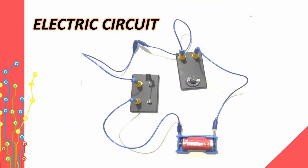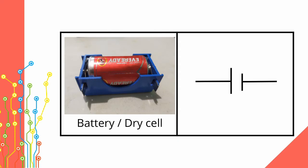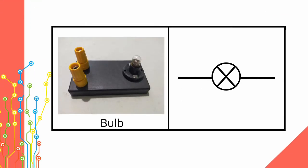This is a simple setup of an electric circuit. Let's learn the parts and symbols of an electric circuit. First is the battery — it is the source of electricity. This is the symbol for battery. The bigger line represents a positive terminal and the small one is a negative terminal. Next is the bulb. It provides the electrical load on the circuit. It has the symbol of a cross enclosed in a circle.